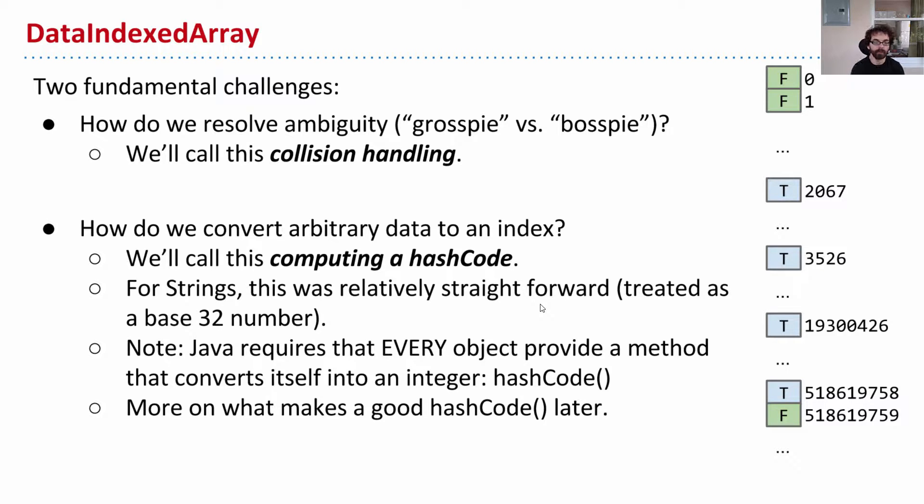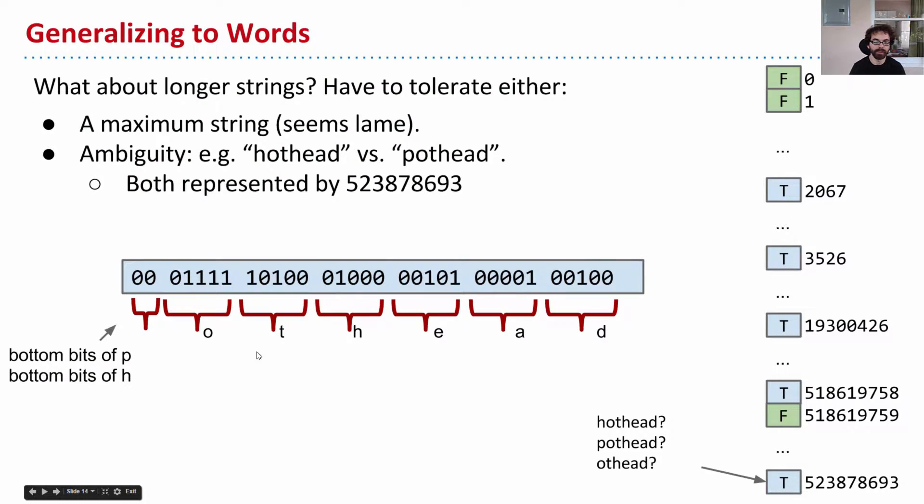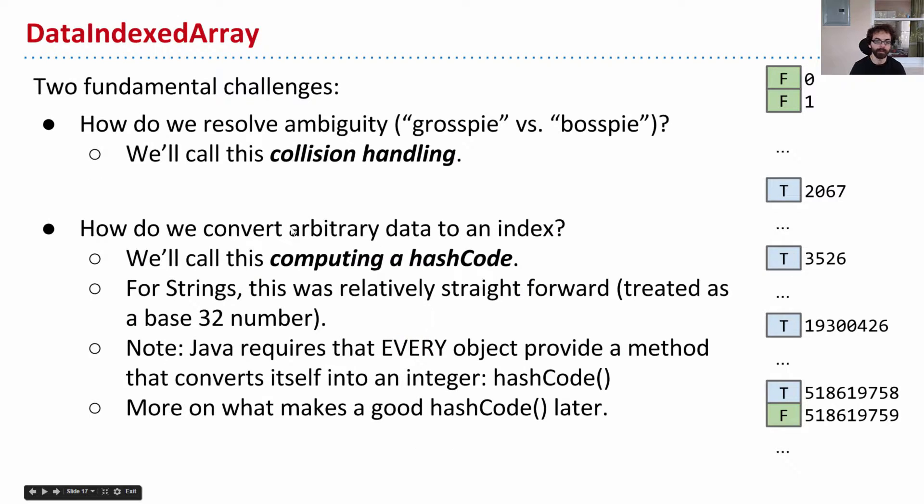So those are our fundamental challenges. The two fundamental challenges are, one, how do we resolve ambiguity? Gross pie and boss pie, those are the same thing. You don't want to mix up a gross pie with a totally boss pie. And so we'll call that issue dealing with that feature of our data structure to be collision handling. And then the other question is, how do we convert arbitrary data to an index? So I came up with this crazy scheme right here, where I basically take each letter and I turn it into five bits. But there are other possibilities. And so there are better ones. And we'll call this process of taking a piece of data and turning it into an integer as computing a hash code.